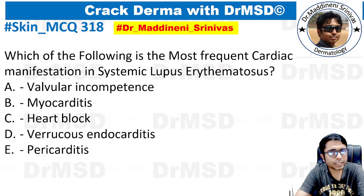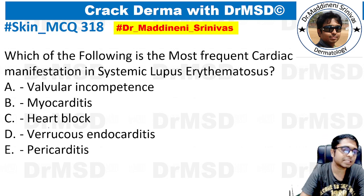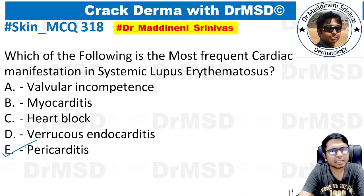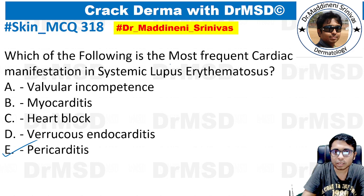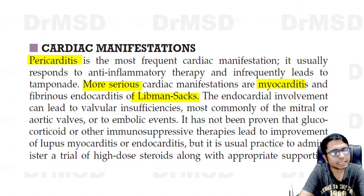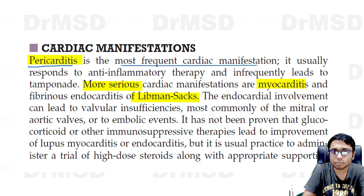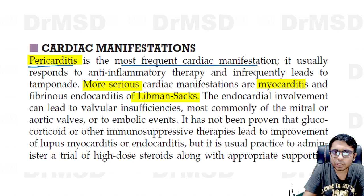So this is today's MCQ. We need to identify the most frequent cardiac manifestation in systemic lupus erythematosus. If you have answered pericarditis, you are right. This is directly taken from Harrison's textbook of internal medicine. Pericarditis is the most frequent cardiac manifestation. It usually responds to anti-inflammatory therapy and infrequently leads to any complication — that is tamponade.